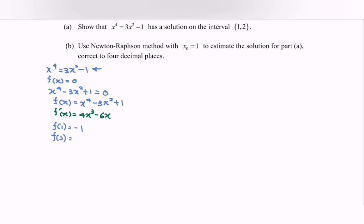Continue with f(2). If we substitute 2, we have 16 minus 12, so we have 4 plus 1, giving us 5.